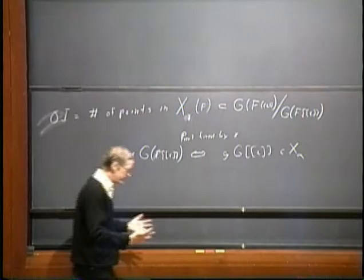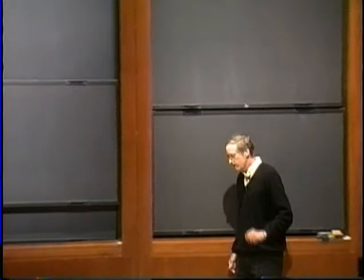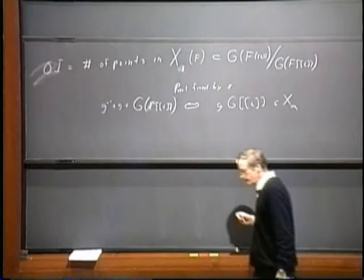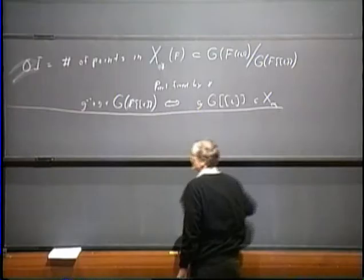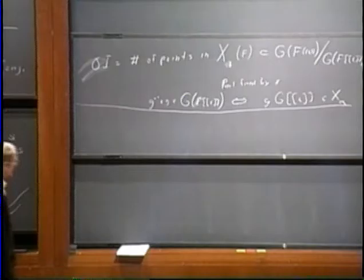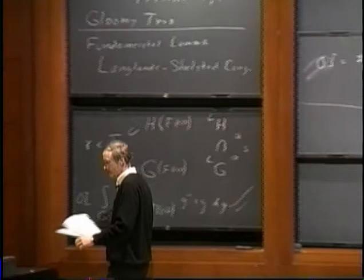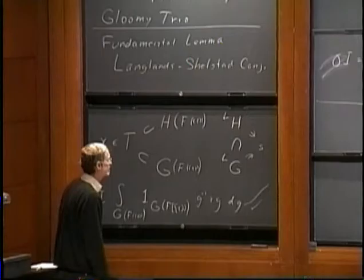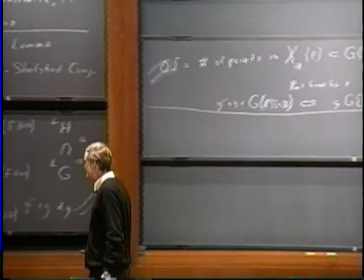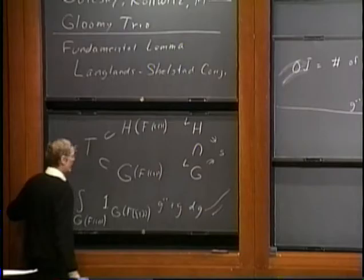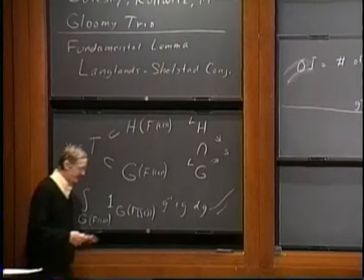From the very beginning, these orbital integrals are counting the points on some variety. Counting points on varieties is of course a geometric question — it's going to be fixed points of Frobenius — and therefore geometry gets in the act from day one. For the remainder of the talk I'm going to suppress F and replace it by the complex numbers, with just occasional comments about the finite case, because I like to draw pictures and I can draw pictures in the complex numbers.